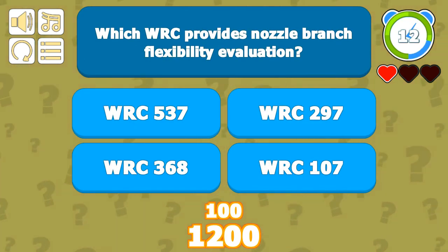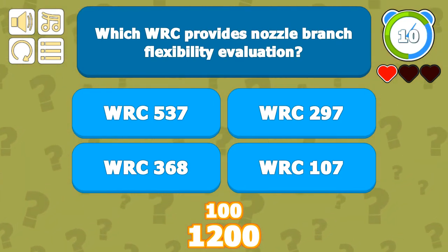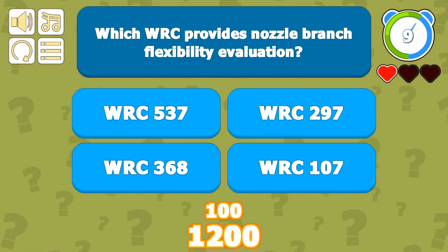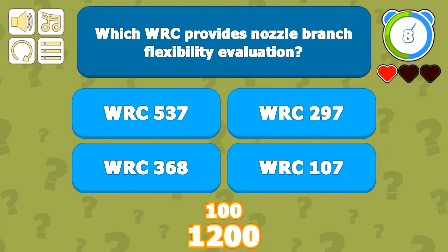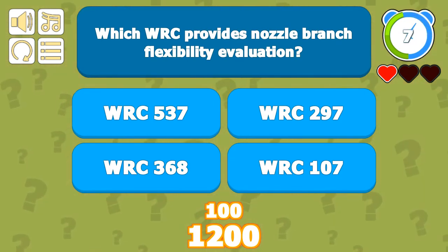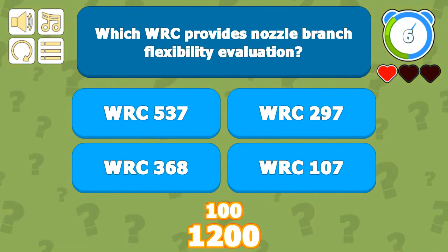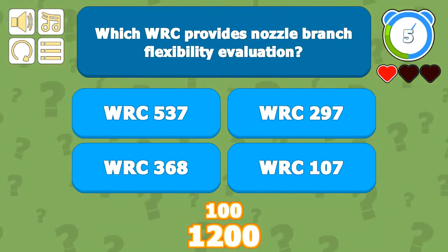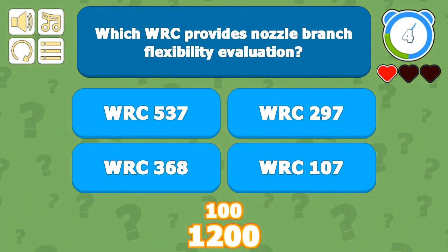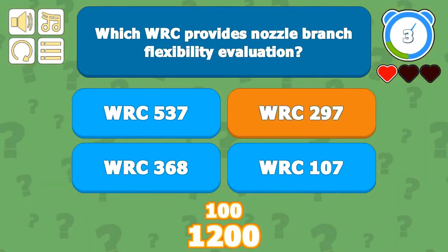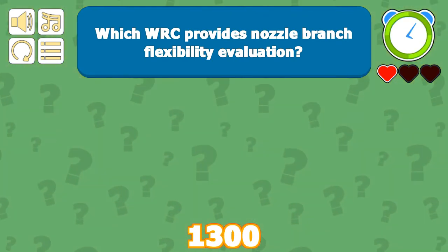For nozzle branch flexibility evaluation, WRC 297 is used.